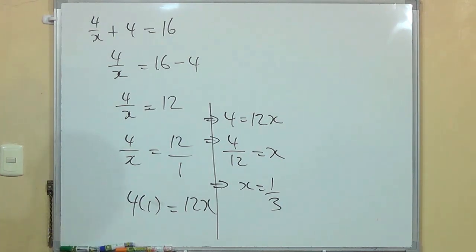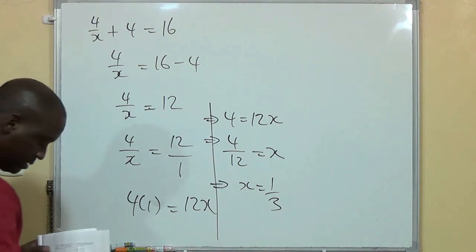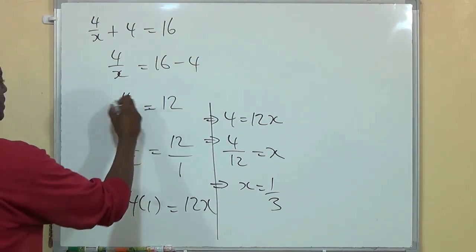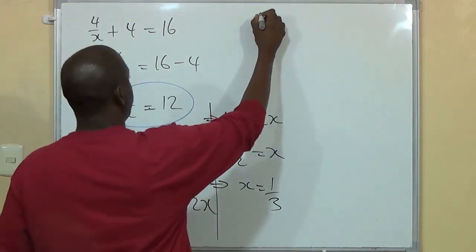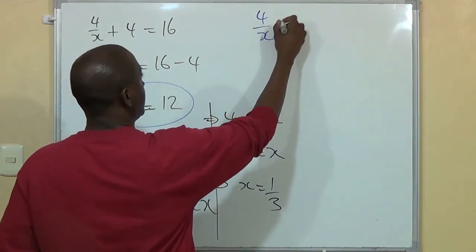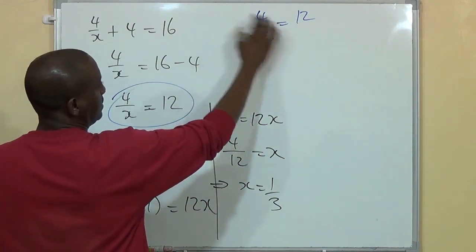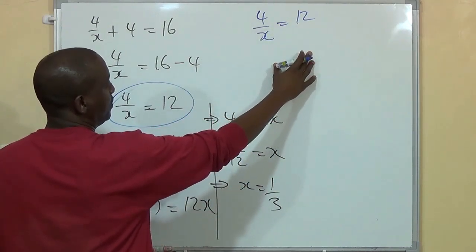I could do that, or I could do this. I could, having gotten to this point, I could say 4 over x is equal to 12. I could divide the two sides by 4. In other words, I cross-multiply.